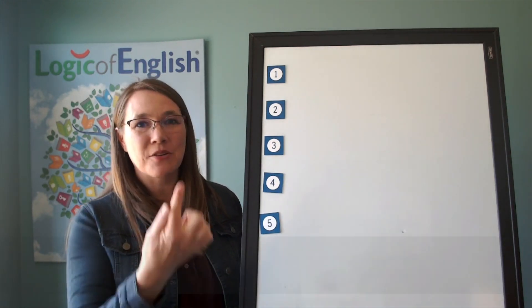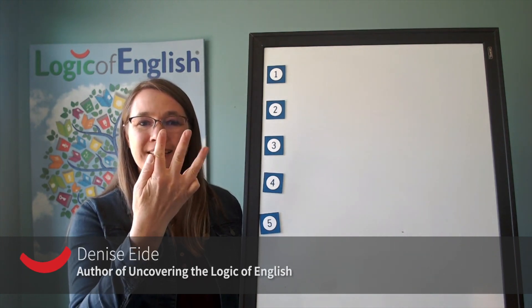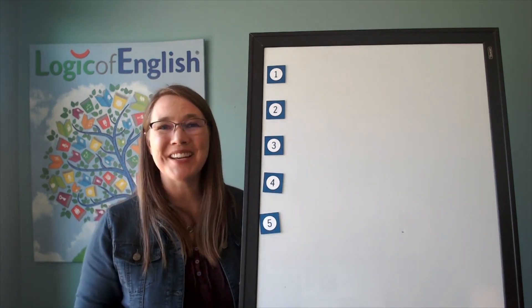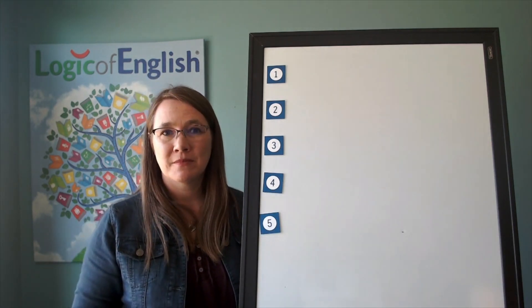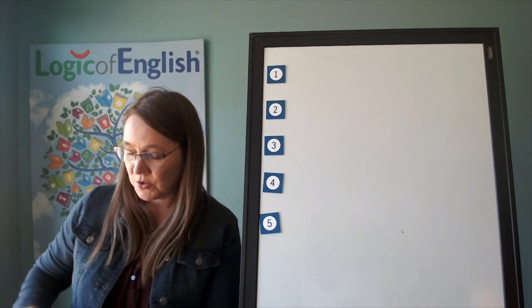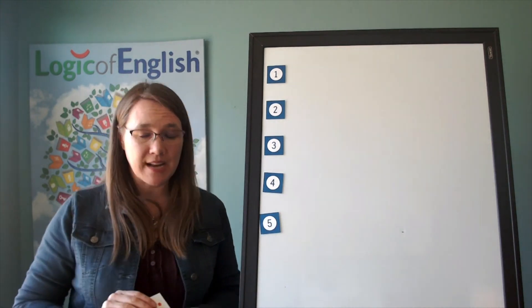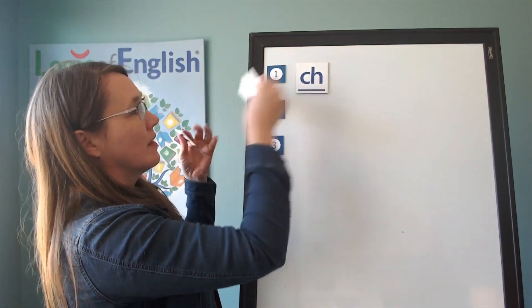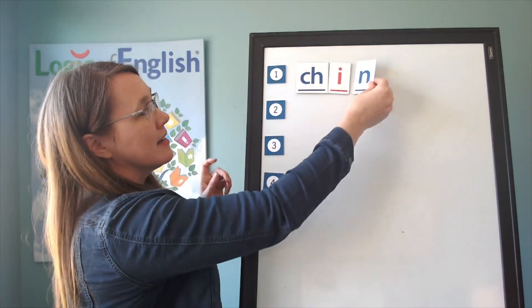Let's sound it out. Ch-i-n. Did you hear that? It has our new phonogram, ch, in it. Go ahead and write chin. Great. I heard you sounding it out as you wrote it. Now help me to write it. Ch-i-n.